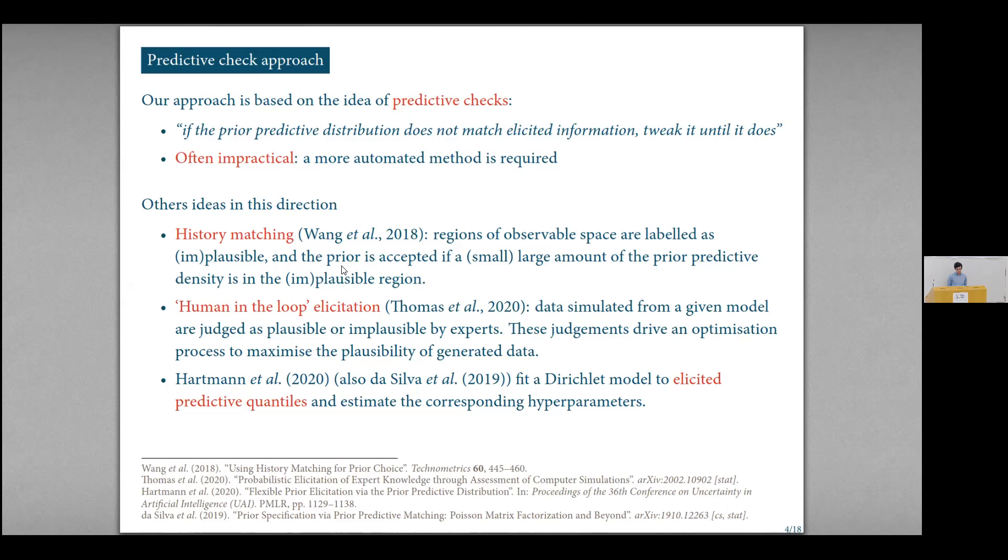So we wanted to see if we could help with coming up with a more generic model agnostic approach for this. You've seen this already, that the conceptual side was covered in the previous talk. We're going to base our approach on the idea of predictive checks. So this is an idea that's quite common. Andrew Gelman's group is quite adherent to this, which is that basically if the prior predictive distribution doesn't match elicited information, then you just keep tweaking it until it does. And this has been quite sensible, but it's often completely impractical in large scale models. And so a more automated method is required.